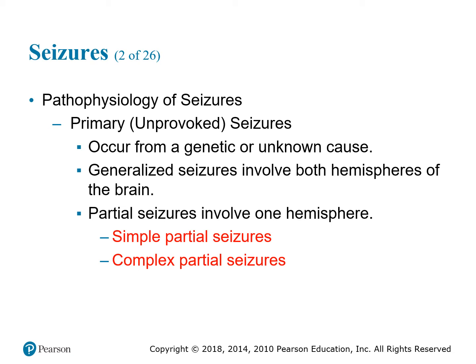Generalized seizures involve both hemispheres of the brain. Recall the reticular activating system — you need it to function along with at least one cerebral hemisphere to be conscious. With a generalized seizure affecting both hemispheres, we have a loss of consciousness.